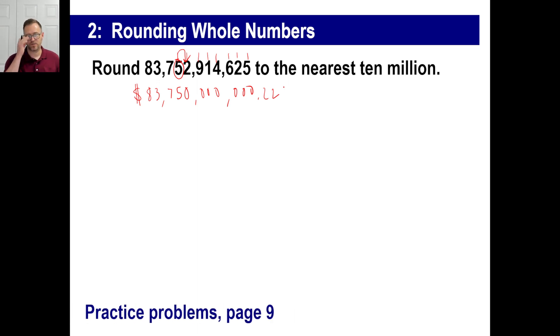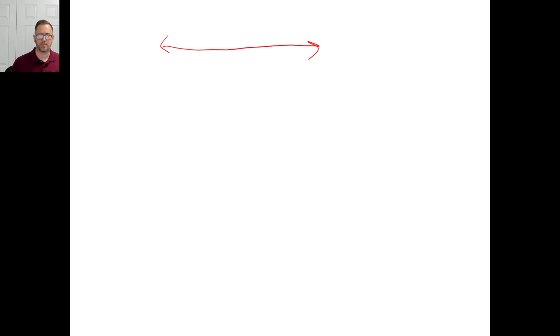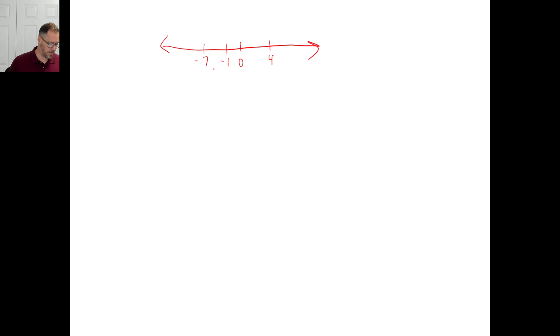Go ahead and pause it and try the practice problems on page nine in your book, then unpause and we'll do them together. Problem A: use a number line to arrange the numbers in order. Draw a rough one — you don't have to be exact. Place negative one here, four over here, negative seven over there, and then zero, seven, and five. Write them down in order from least to greatest.